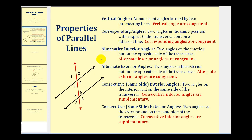In the previous video, we defined the different types of angles formed when a transversal cuts two lines. We'll go ahead and review that, as well as state how they relate to one another. Vertical angles are non-adjacent angles formed by two intersecting lines, and we know from before that these angles are congruent.